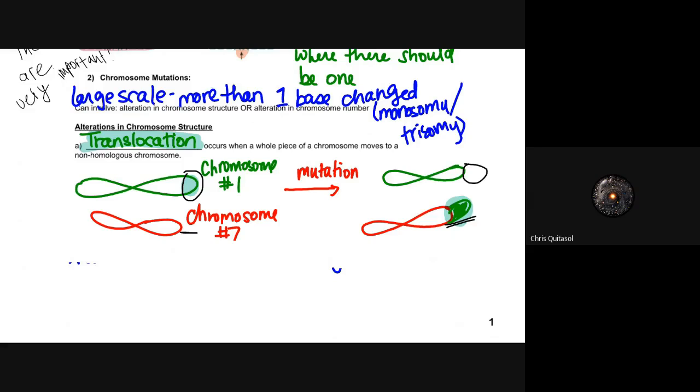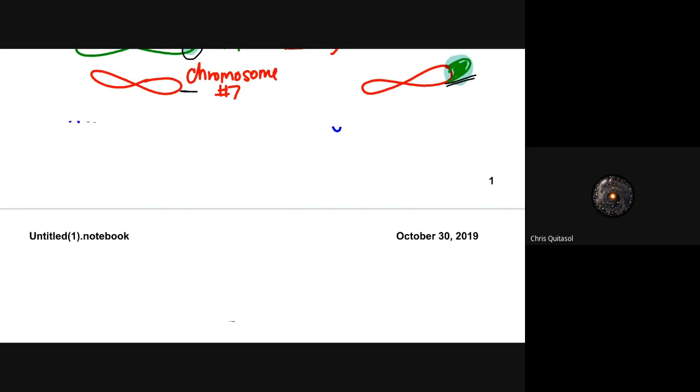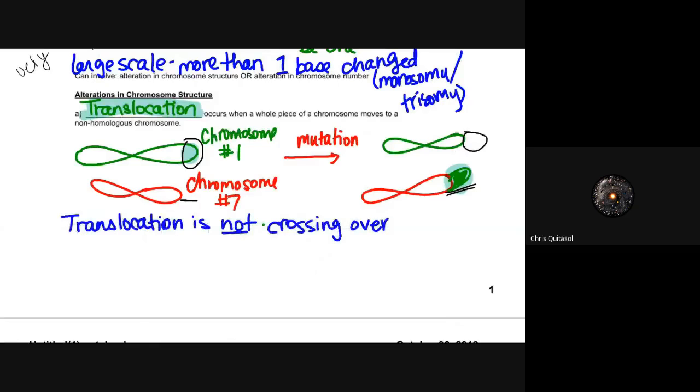When I say non-homologous, again, I mean it's the non-paired chromosome that it's attached onto. Chromosome 1 and chromosome 7 are completely different. If it was attaching onto the homologous pair of chromosome 1, it would still have negative impacts, but not as bad as a non-homologous attachment. One final note here with regards to that is that this is not crossing over. There is not an equal sharing of genetic information amongst these chromosomes. It's not that chromosome 7 shares some of its information with chromosome 1. Not the case. Translocation is not crossing over.